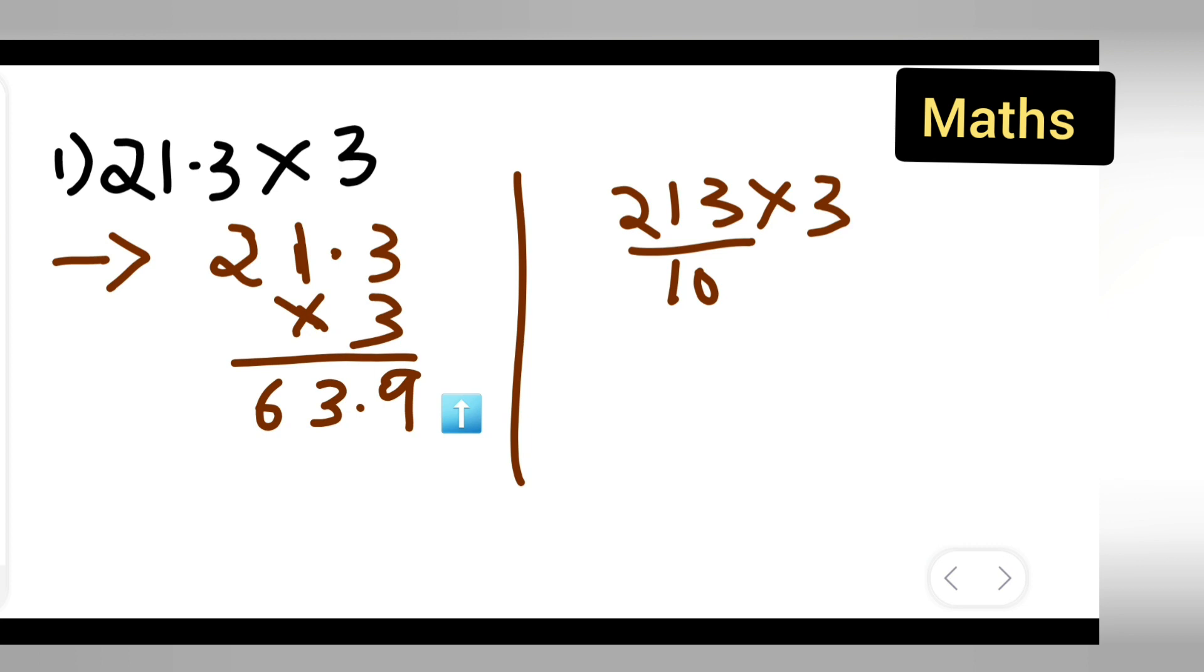So directly you can multiply this: you would get 639 upon 10, which is nothing but 63.9. So when you multiply this, you get the answer: 63.9 is your answer.